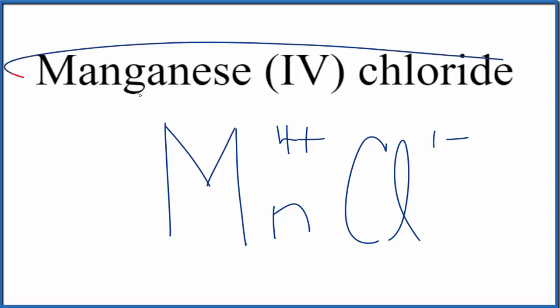So because manganese (IV) chloride is neutral, it doesn't say ion after it, we need to have these charges here add up to zero. The way we can do that is if we had 4 chloride ions. 4 times 1-, that's 4-, that would balance the 4+, give us a net charge of zero.